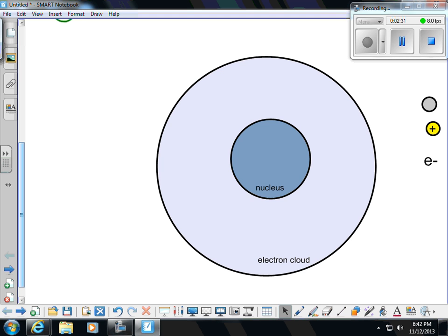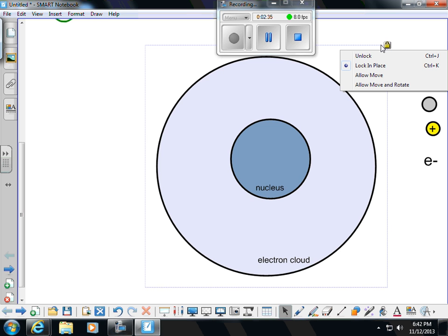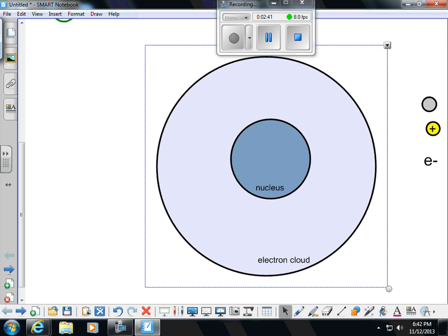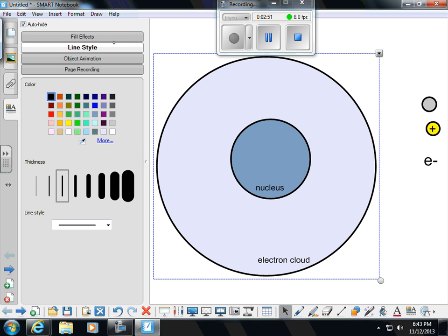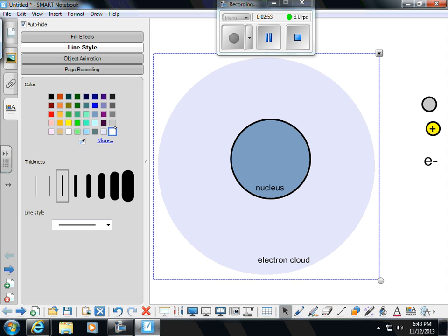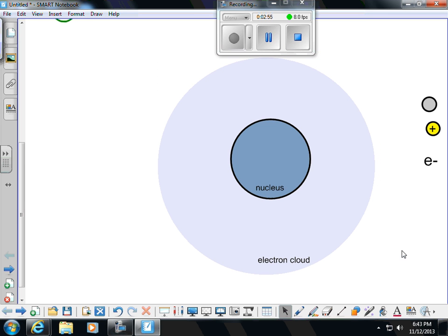I have my electron cloud. The electron cloud, we don't actually see a circle or anything, but it is a shaded area so that you can tell that's what it is, the electron cloud.